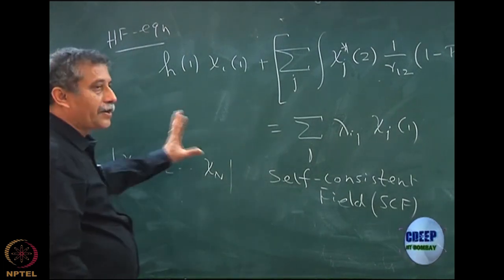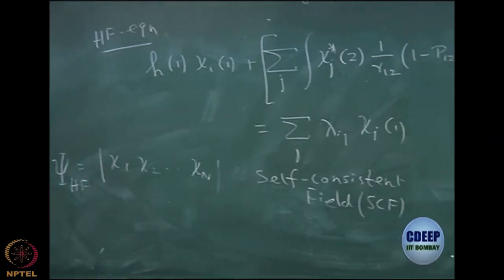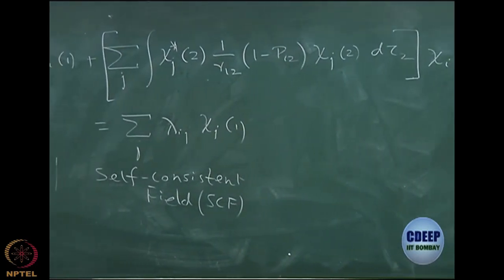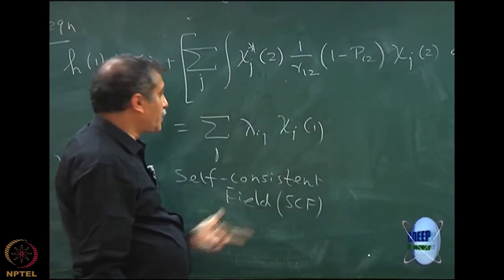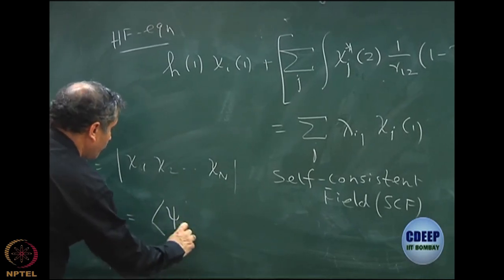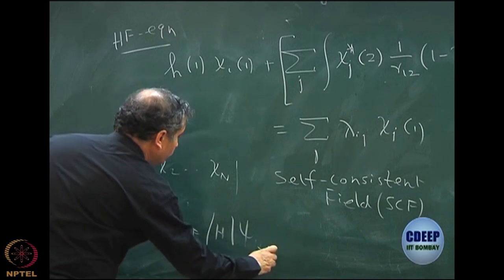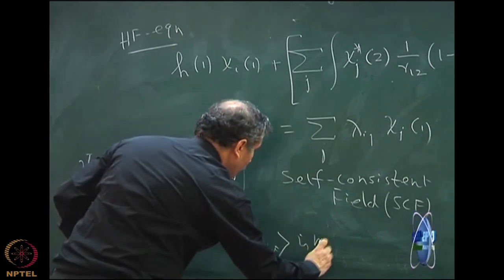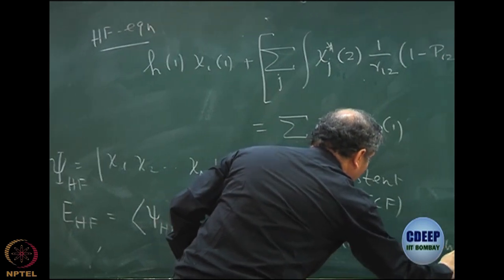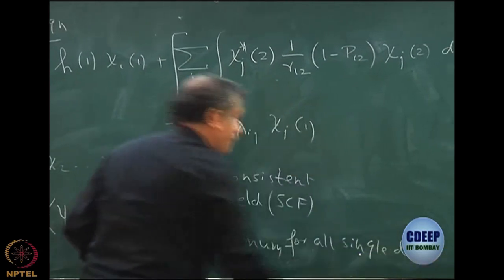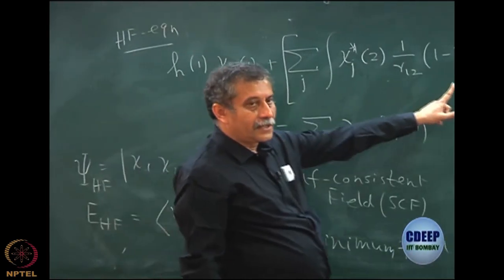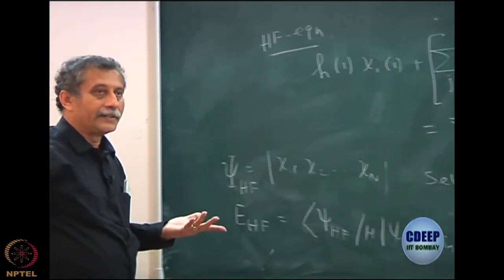Whether non-canonical or canonical, the procedure is exactly the same. This is the Hartree-Fock equation for one particular spin orbital. Note that this entire term came out of the variation method — I wanted to ensure that the energy E_HF = <psi_HF | H | psi_HF> is now a minimum. We have ensured that this is a minimum for all single determinants: this particular Slater determinant which satisfies this equation gives the minimum energy. That is what we wanted.